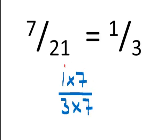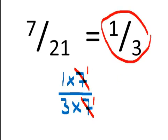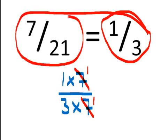Now what we have is a 7 in the numerator and a 7 in the denominator as a factor, and they cancel each other out. They don't become 0 — they just become the number 1. So now we have 1 times 1 is 1, and we have 3 times 1 is 3. So 1 third is an equivalent fraction to 7 over 21.